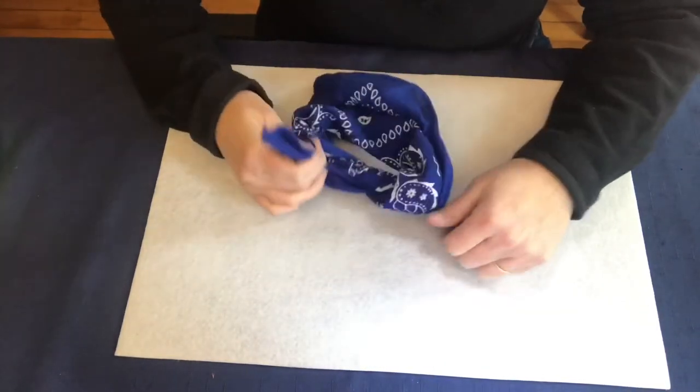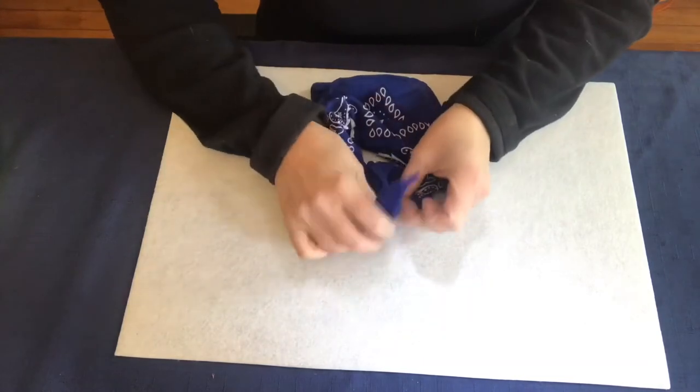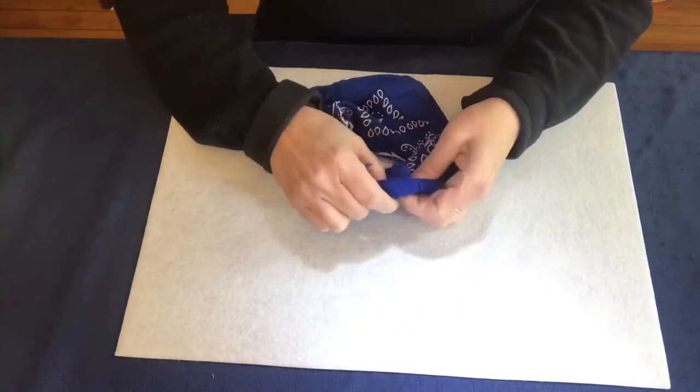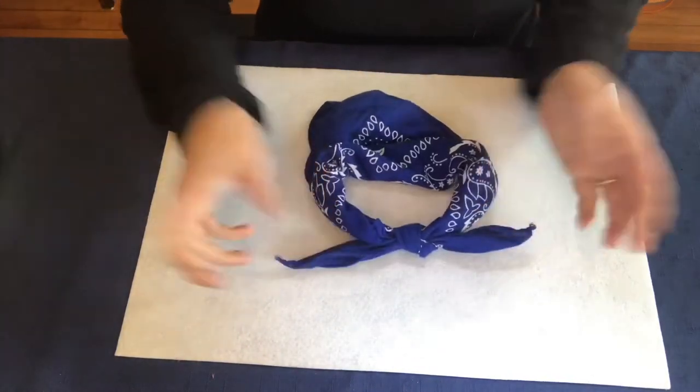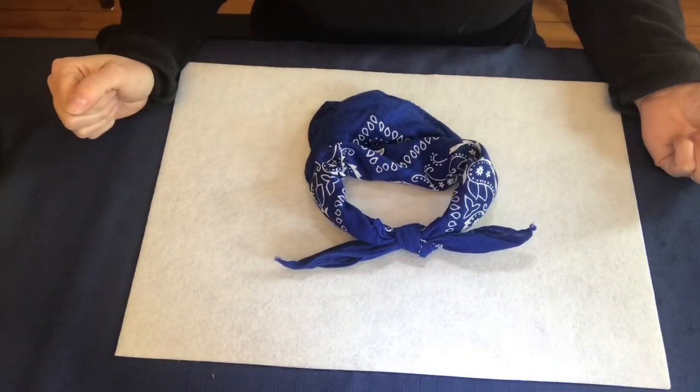This allowed an officer to inspect the sailor's basic knot knowledge by simply examining their uniform. If their neckerchief was improperly tied, how could they be trusted to handle the sails?